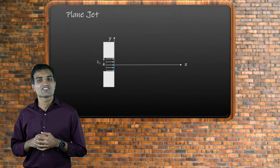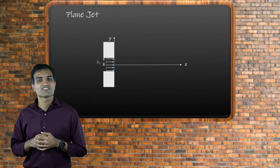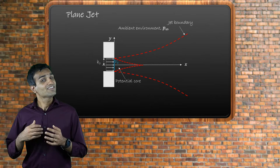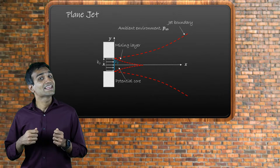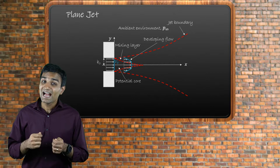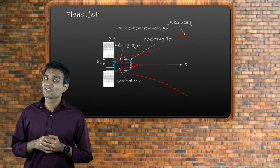Similar to the boundary layer on the flat plate, the jet forms a 2D shear layer. Just downstream of the opening, there is a potential core where the fluid can be treated as inviscid. In this region, the fluid velocity is relatively constant and equals the exit velocity of the jet. Outside this inviscid zone, we have a developing region where the fluid velocity decreases from the exit velocity V0 to the ambient air velocity at the outer boundary of the jet.